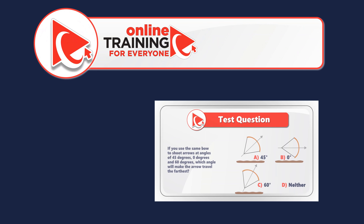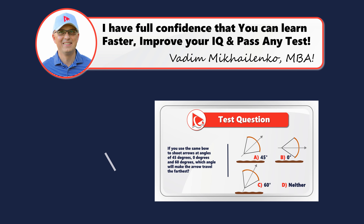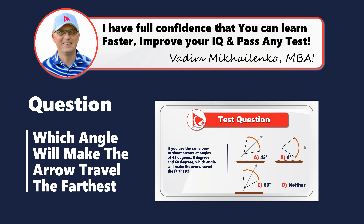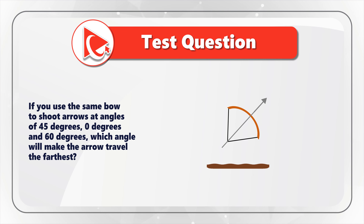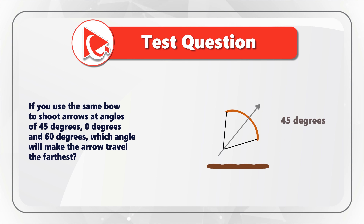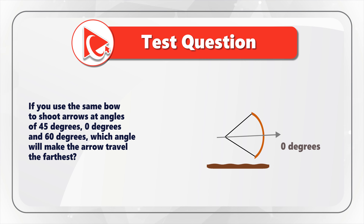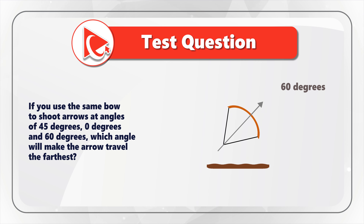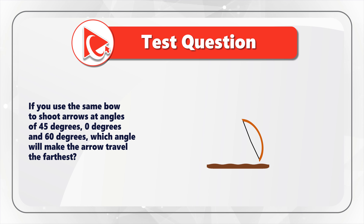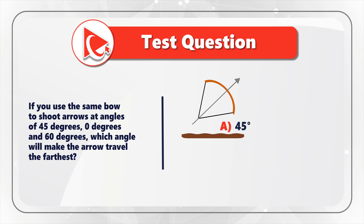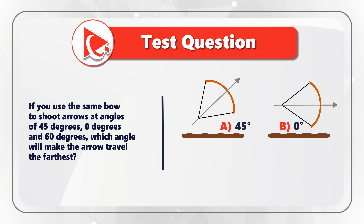I think this question is not just about engineering, but also about your critical thinking and analytical skills. If you use the same bow to shoot arrows at angles of 45 degrees, 0 degrees, and 60 degrees, which angle will make the arrow travel the farthest? You have 4 possible choices: Choice A: 45 degrees. Choice B: 0 degrees.